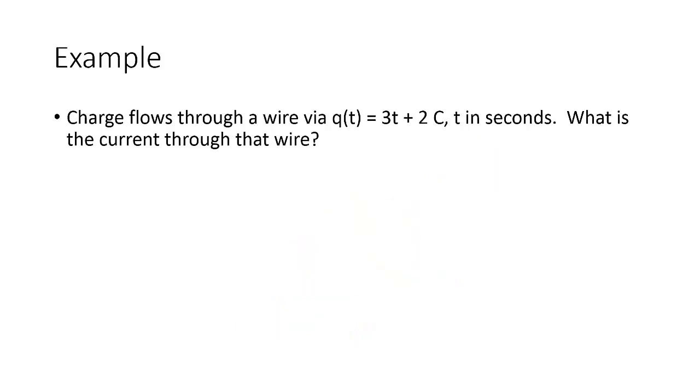Let's do an example. Let's say that charge is flowing through a wire via this function. So q of t equals to 3t plus 2 coulombs, where t is in seconds. So we always need to make sure that we're clear on our units. Coulomb is our unit of charge. And t is in seconds, which means that we can directly apply that equation. What is the current through that wire?